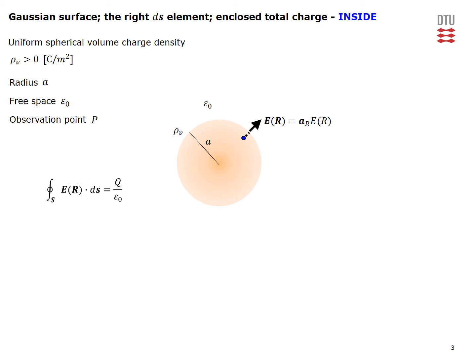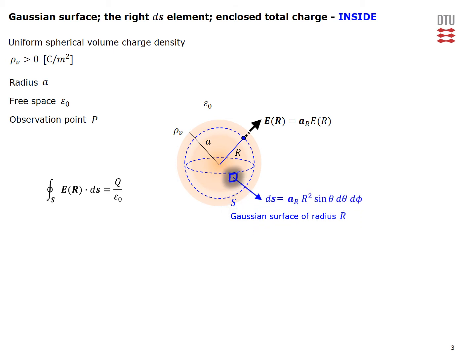Consider first the case of the observation point inside of our charge distribution. On the left-hand side of Gauss's law we have the total flux of the electric field intensity through a closed surface S, equal to the total charge enclosed by the surface divided by free space permittivity epsilon naught. We introduce a spherical Gaussian surface of radius r with the standard ds element. On the right-hand side we need to find the total charge enclosed by this Gaussian surface.